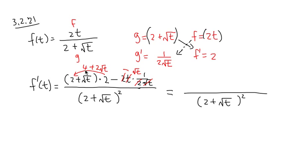Let's see. We have 4 right here. And 2 square root of t minus square root of t. We have positive 2 plus square root of t. So overall, our answer is 4 plus square root of t, all over parentheses 2 plus square root of t squared.